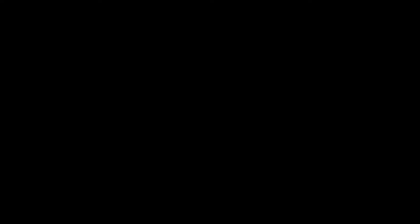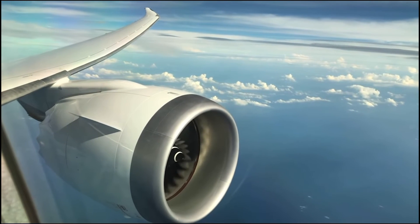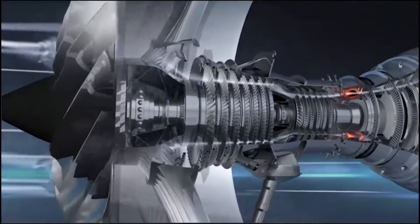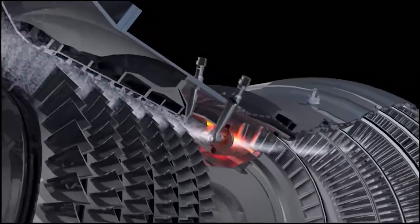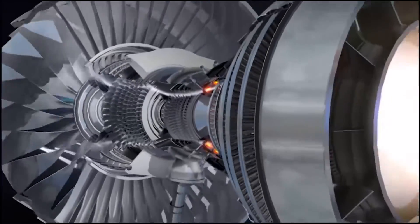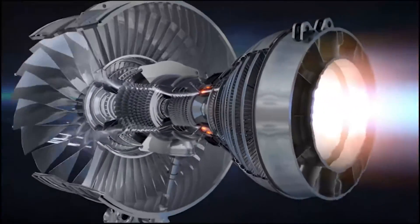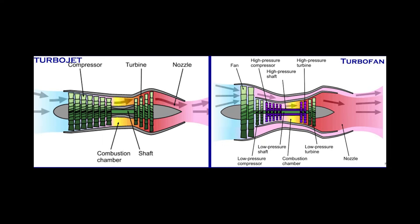Another popular engine used in the aircraft industry is the turbofan engine, in which a large fan driven by the turbine forces a considerable amount of air through a duct. In other words, some of the incoming air passes through a fan and the rest enters a compressor. Therefore, a turbofan gets a part of its thrust from the fan. Turbofans are more efficient than turbojets, since they generate more thrust for an equal amount of fuel.